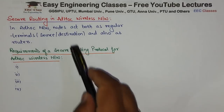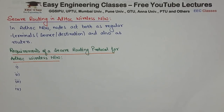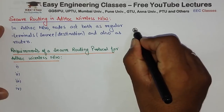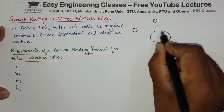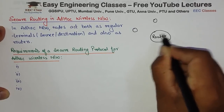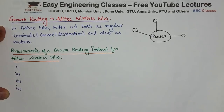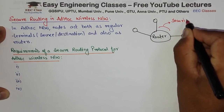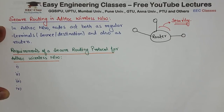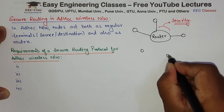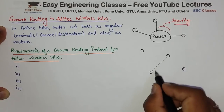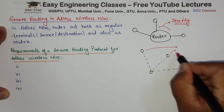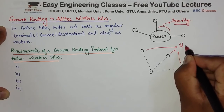In ad-hoc networks, a node acts as both a regular terminal — source and destination — and also as a router. In wired networks, you have a dedicated router separate from the nodes. But in ad-hoc wireless networks, nodes are connected with each other and serve as source, destination, and router all at once.